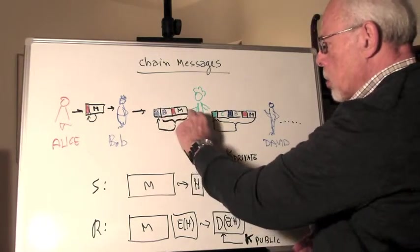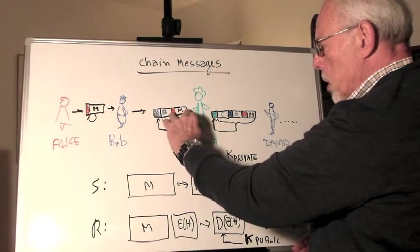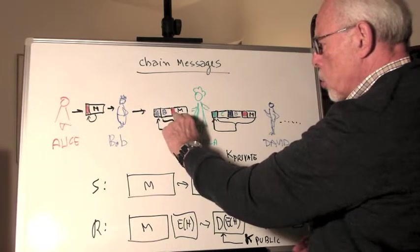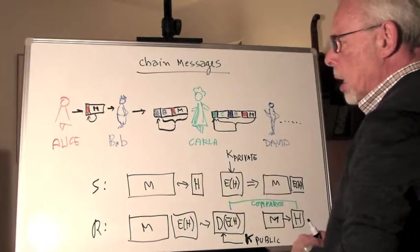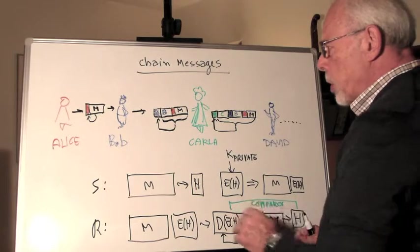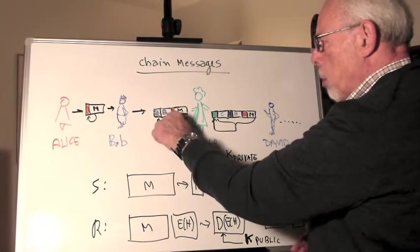When it fits, it knows that everything here is with integrity. And if she wants to make sure that the message that Alice sent is also with full integrity, she does with this hash what Bob did before.